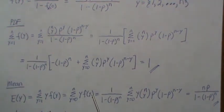When we plug in our probability mass function, the denominator can be taken out because it's not indexed by Y. This looks like the mean of a binomial, which we know is n times p. So this is the mean of a zero-truncated binomial distribution.